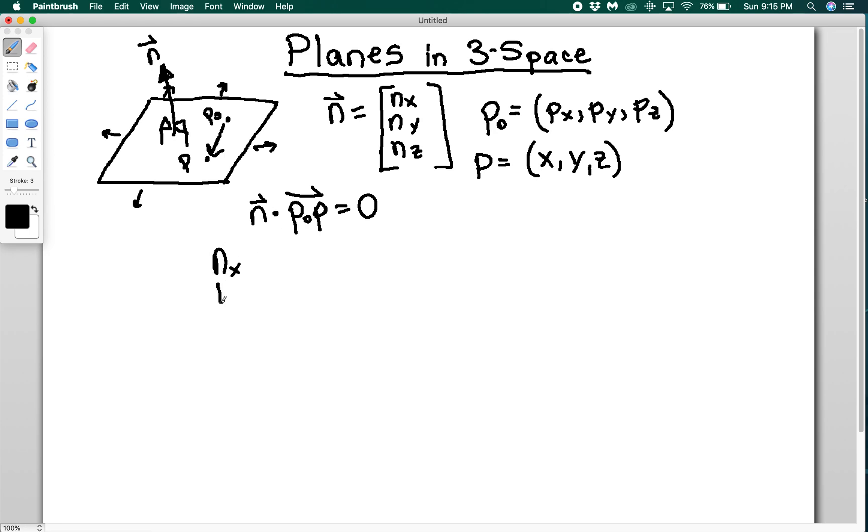Because the vector p0 p lies in the plane, and the normal vector n is perpendicular to the plane. Which means that if I do vector n dotted with vector p0 p, I should get 0. So let's do that. So if I have nx, ny, nz dotted with this vector. And to generate this vector, we have these two points. I'm going to draw a vector that goes from here to here. And then what I can do is say p minus p0 to get this value. So I'm going to dot it with x minus px, y minus py and z minus pz. And this is going to equal 0.